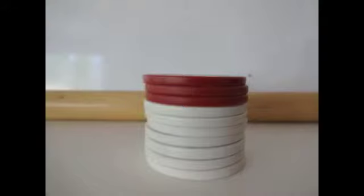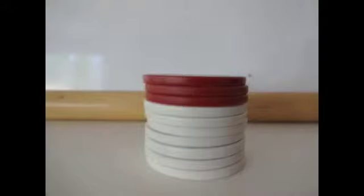So here we have 10 chips representing one liter, and three of them are punch. So 3 out of 10, which is the same as 30 over 100, or 30 percent.